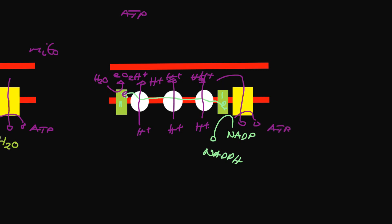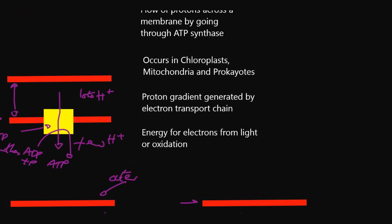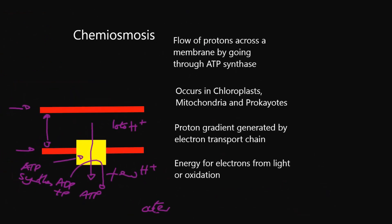To recap: chemiosmosis is flow of protons across a membrane and it goes through ATP synthase. It occurs in chloroplasts, mitochondria, and prokaryotes. The proton gradient is generated by an electron transport chain. The difference between photophosphorylation and oxidative phosphorylation is where the electrons come from and where the energy to move those electrons comes from. In photophosphorylation, the electrons come from water and the energy comes from light being captured by photosystem 2 and photosystem 1. In oxidative phosphorylation, the energy comes from the oxidation of a respiratory substrate.